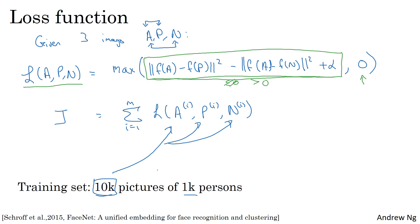If you have a training set of say 10,000 pictures with 1,000 different persons, what you'd have to do is take your 10,000 pictures and use them to generate and select triplets, then train your learning algorithm using gradient descent on this cost function, which is defined on triplets of images drawn from your training set. Notice that in order to define this dataset of triplets, you do need some pairs of A and P — pairs of pictures of the same person. So for training, you do need a dataset where you have multiple pictures of the same person. If you had just one picture of each person, you can't actually train this system.